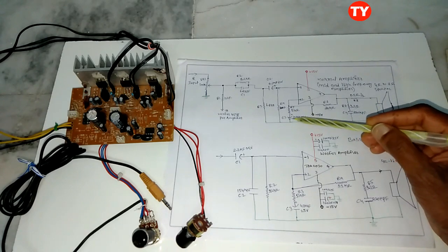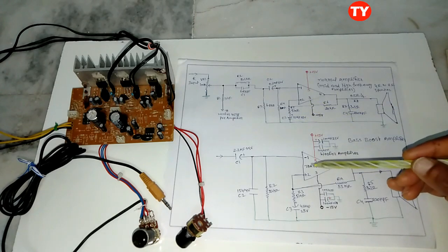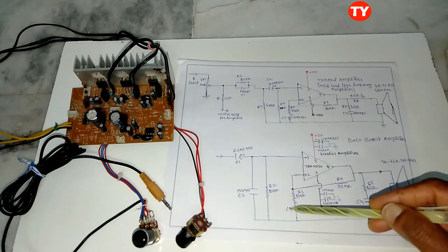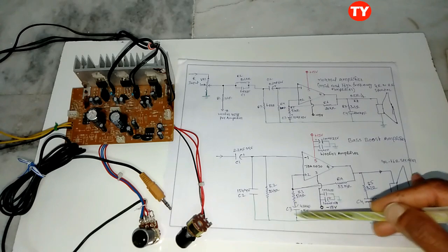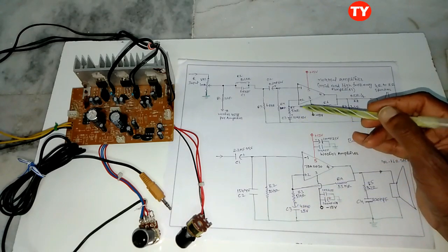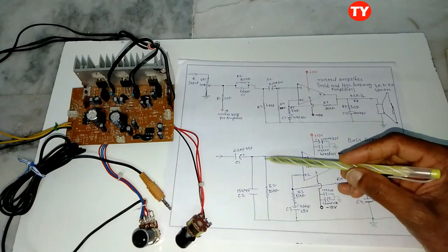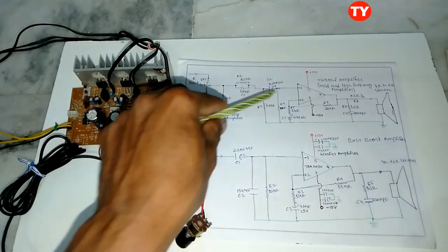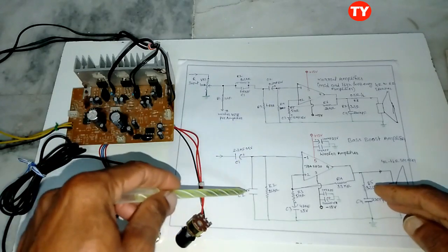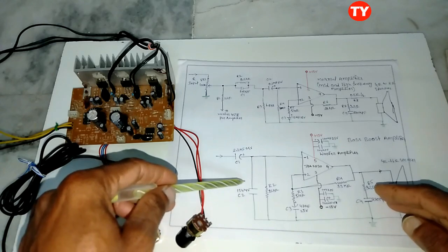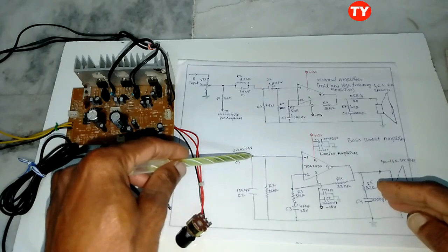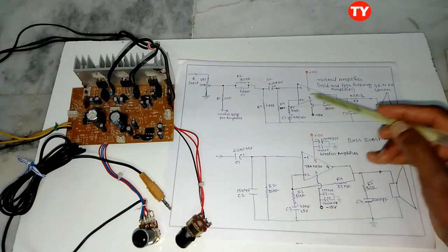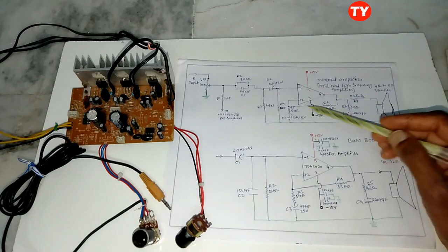Here we can see the low pass amplifier — the woofer amplifier section. Here 25MF and 47MF capacitors are used. The input impedance resistor used is 22k ohms. One more 1.5k pF capacitor is used to cut off high frequencies and send to the amplifier. The second pin to the fourth pin is connected with 22k ohms for gain control.